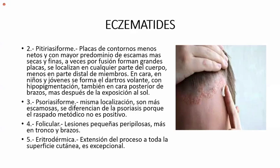¿Conocen ustedes el dactos volante? Son máculas escamosas blanquecinas en el rostro. Casi todos los niños en alguna oportunidad las presentan, con hipopigmentación. También en cara posterior de brazos, se nota después de la exposición al sol, se nota en clarito. La piel sin el eritema eczematoso no se broncea, el resto sí.